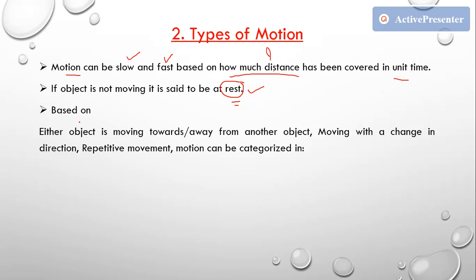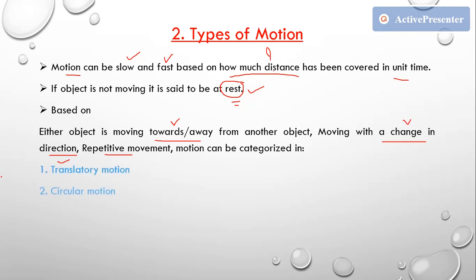Based on certain things, motion can be categorized. Those things are: whether the object is moving towards or away from another object, whether the object is moving with a change in direction, or whether the motion is repetitive. Based on these three things, motion can be categorized into translatory motion, circular motion, rotational motion, periodic motion, and non-periodic or random motion — five types in total.